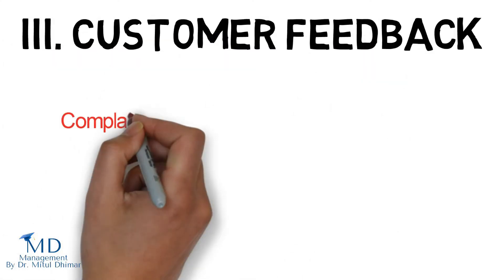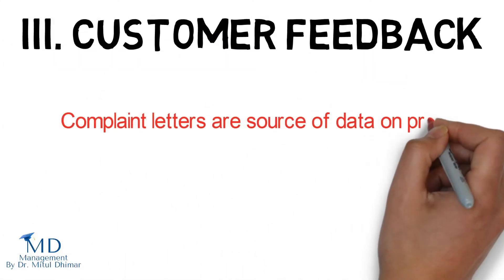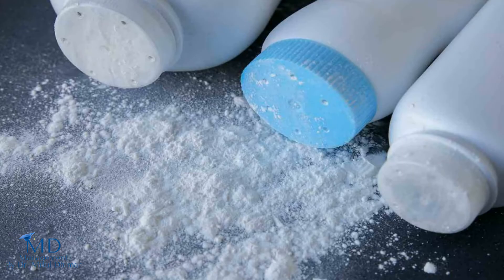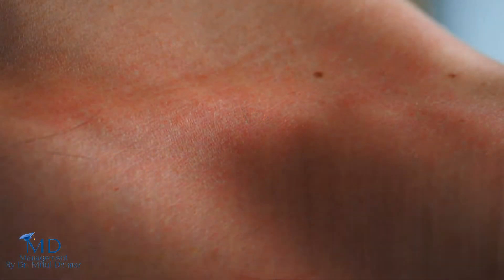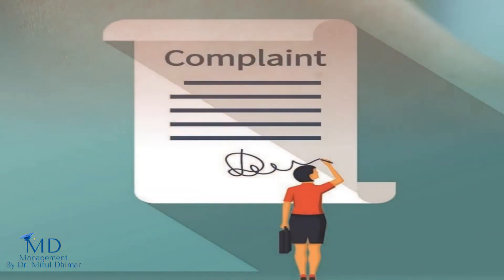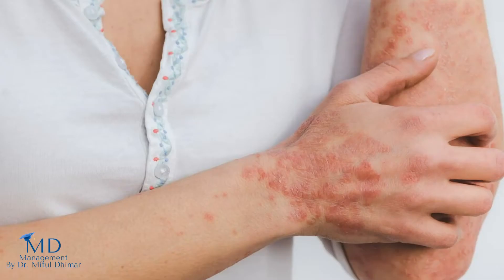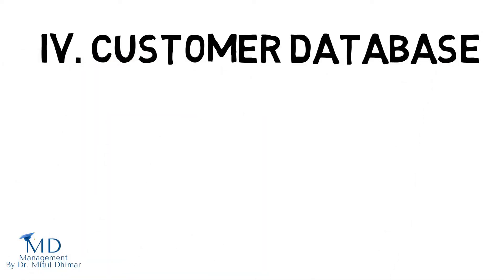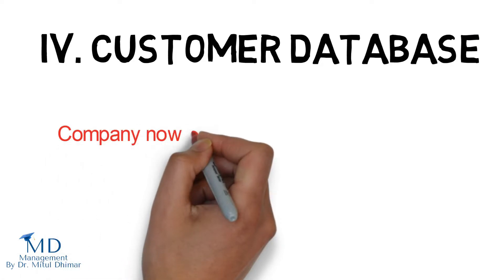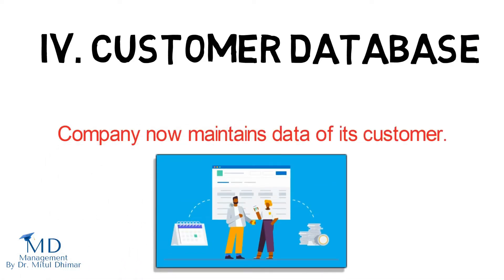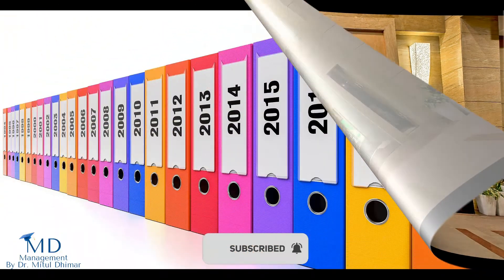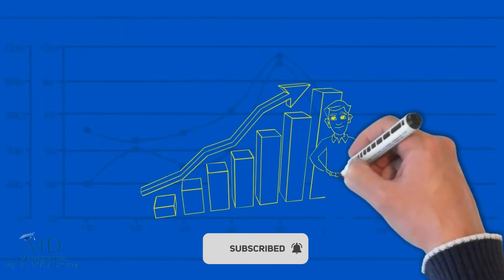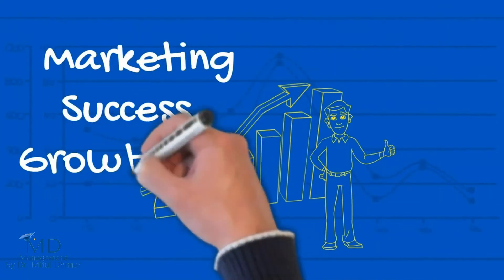3. Customer feedback: Complaint letters are a source of data on product quality and service problems. For example, a pre-market skin test of a new talcum powder uncovered no problems, but complaint letters revealed serious problems among a small group with sensitive skin when the product was introduced. 4. Customer database: Companies now maintain data of their customers. For example, Holiday Inn has created a customer database for its Priority Club members, which is used extensively by marketing managers for formulating relationship marketing strategies.